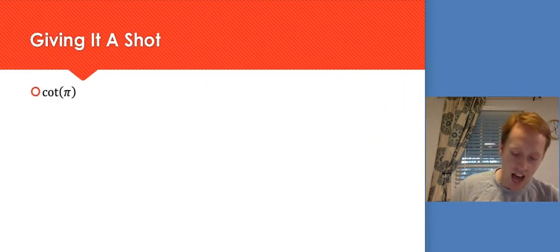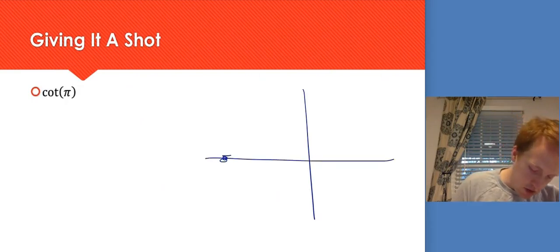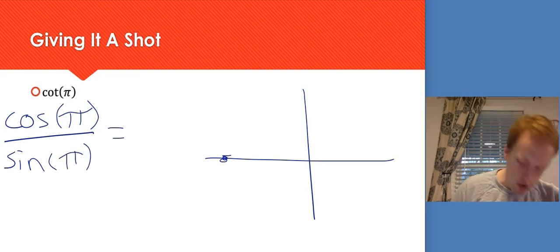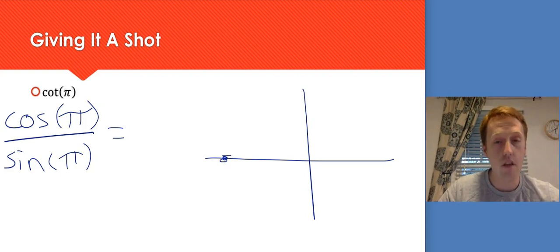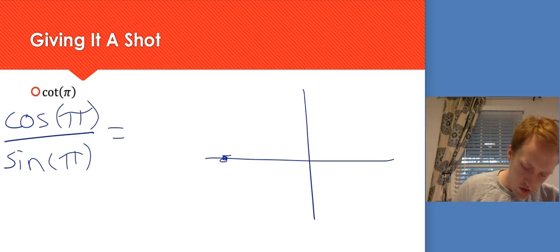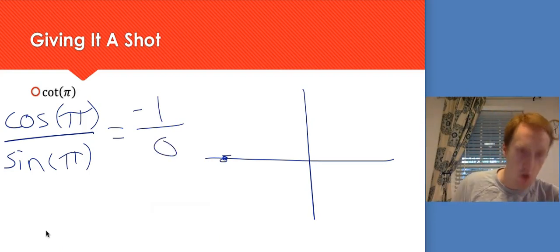Cotangent of π. Cotangent means cosine of π over sine of π. Cosine of π — I've moved left, I'm on an axis, so the x-coordinate is 1, but negative because I went to the left: negative 1. Sine of π — sine is the y value, and I'm on the x-axis, so I haven't gone up or down: that's 0. I can't divide by 0, so the answer is undefined.